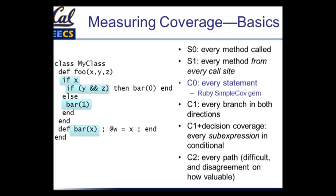The coverage level that a lot of people aspire to — though there's disagreement on how much more valuable it is — is C2: you take every path through the code. This is difficult because it tends to be exponential in the number of conditions. In general, it's difficult to evaluate if you've taken every path through the code, and in most commercial software houses there's not complete consensus on how much more valuable C2 is compared to C0 or C1. SimpleCov takes advantage of some built-in Ruby features to give you C0 coverage with nice reports showing coverage at the level of individual lines in your file.